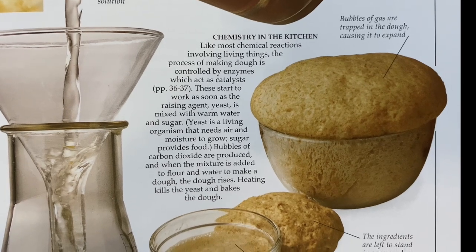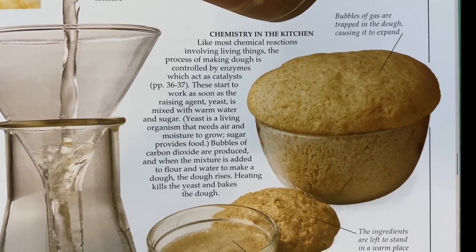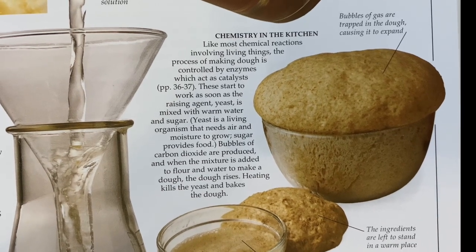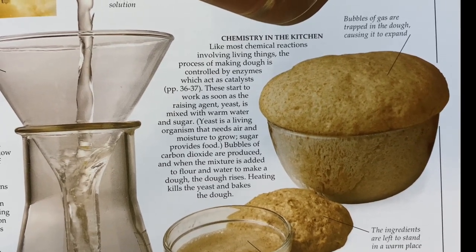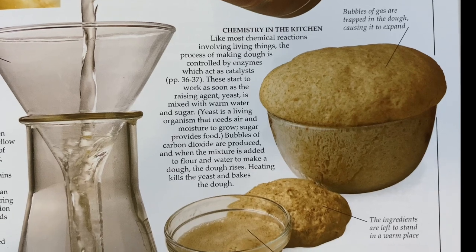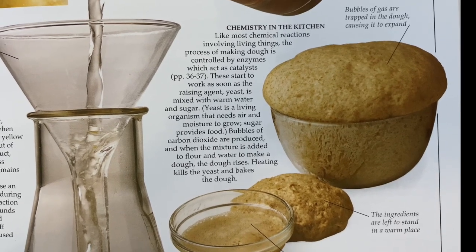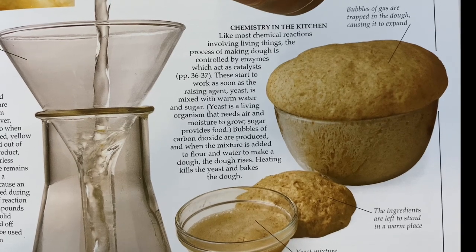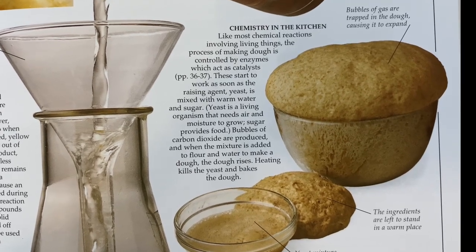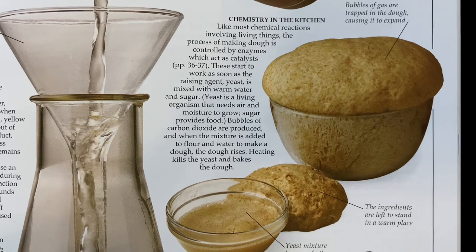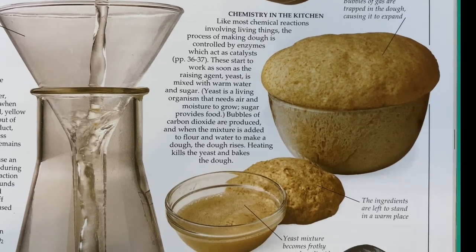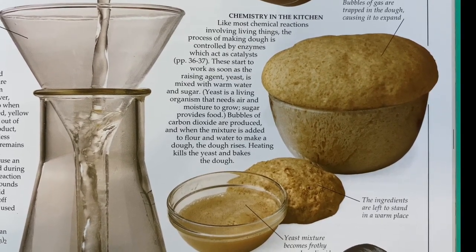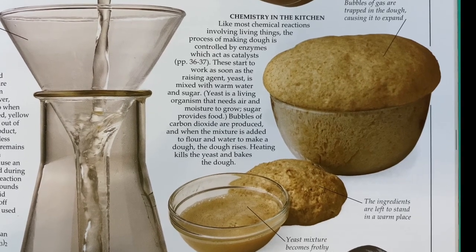Like most chemical reactions involving living things, the process of making dough is controlled by enzymes which act as catalysts. These start to work as soon as the rising agent yeast is mixed with warm water and sugar. Yeast is a living organism that needs air and moisture to grow. Sugar provides the food. Bubbles of carbon dioxide are produced, and when the mixture is added to flour and water to make dough, the dough rises.